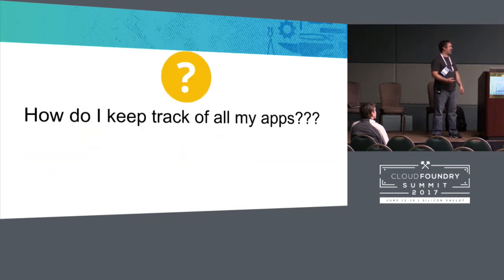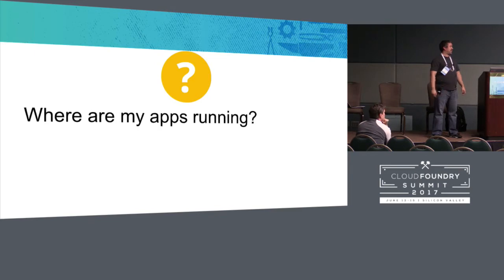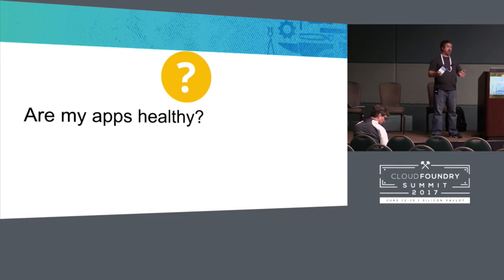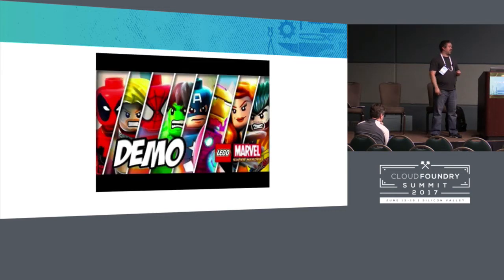Some of the questions we had going into this: How do I keep track of all my apps? Are they running — should they be running? Maybe you have a DR zone that's supposed to be cold where you want to make sure apps aren't running. Are my apps actually healthy or not? Maybe they're flapping up and down, or health checks are failing behind the scenes but the app is still up — maybe it can't connect to a database. That kind of visibility is hard, especially across multiple Cloud Foundry foundations.